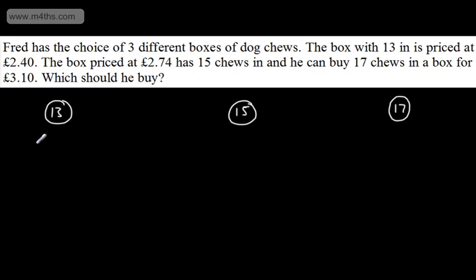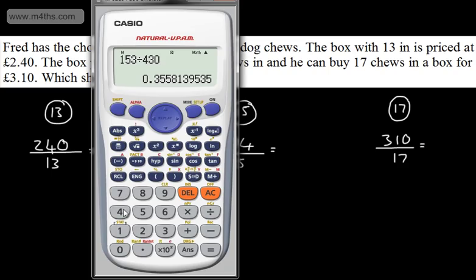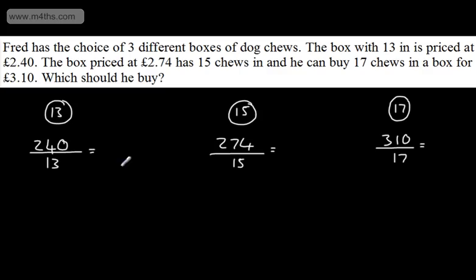So let's work out the unitary cost. So it's going to be price which is 240 divided by the quantity which is the first one. The price of 274 divided by 15 which is the second one. Or 310 divided by 17 on the last one. So let's go and work this out. So 240 divided by 13. So that one is going to give me on here 18.461. So let's write this in. So 18.461 dot dot dot. Remember, this is the cost per chew.